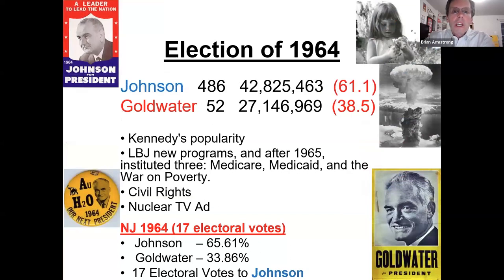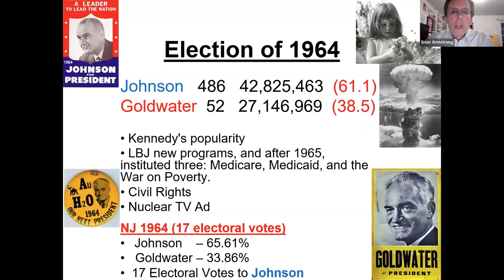Kennedy was assassinated in 1963 while beginning his reelection campaign. Johnson became president and was a very skillful legislator, using the Kennedy death to work through a lot of Great Society programs — Medicare, Medicaid, the War on Poverty, and Civil Rights — using Kennedy's popularity and martyrdom. He ran against Goldwater.